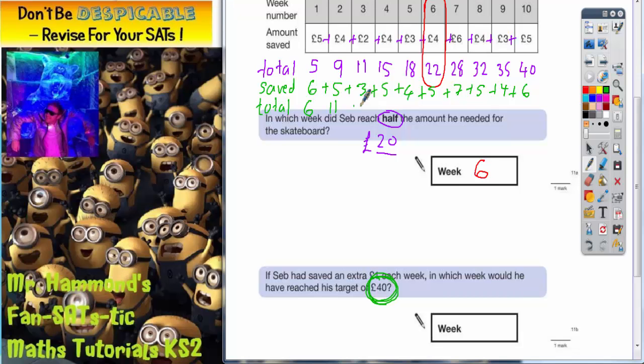Add on the £3, £14. Add on the £5, £19. Add on the £4, £23. Add on the £5, £28. Add on the £7, £35. Add on the £5, £40.